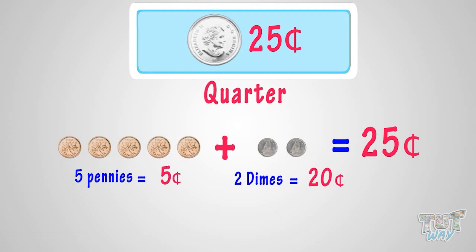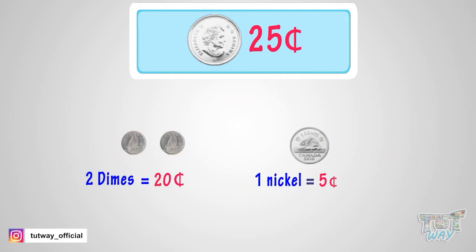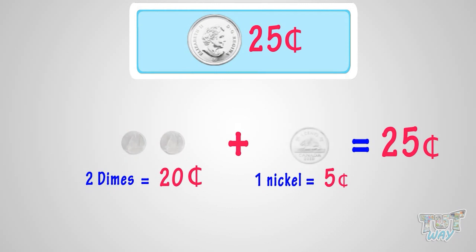There can be just so many ways. See one more way: one nickel and two dimes. Two dimes make twenty cents, one nickel makes five cents. So in total, we will have twenty-five cents. So we can exchange this set of coins too for a quarter.